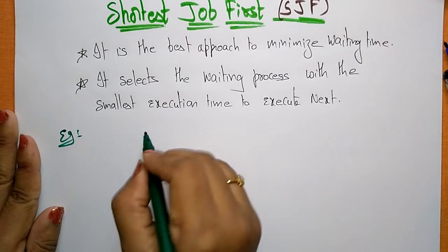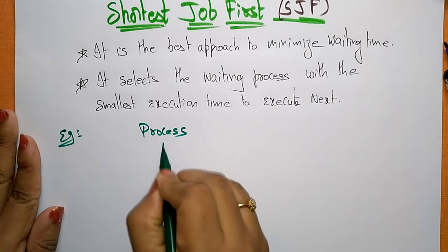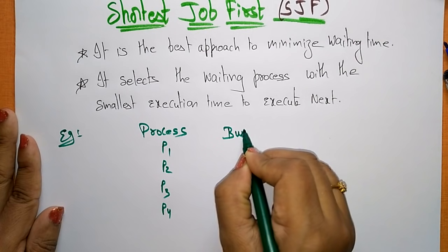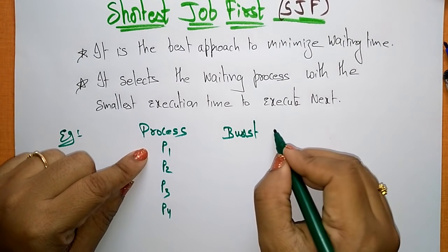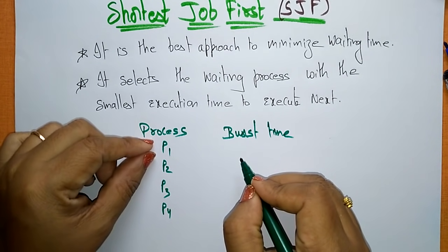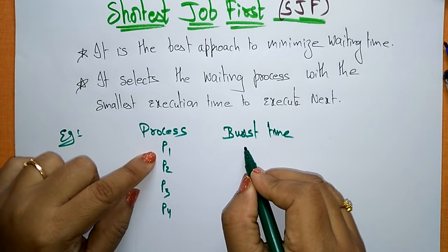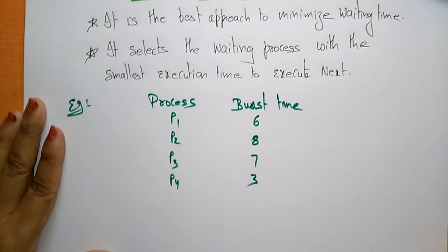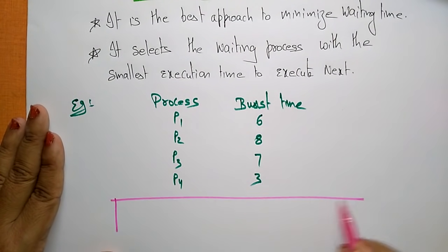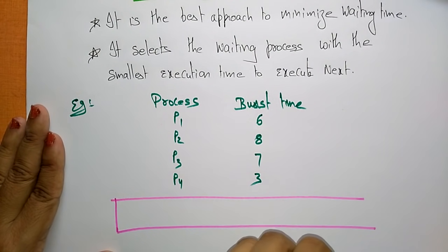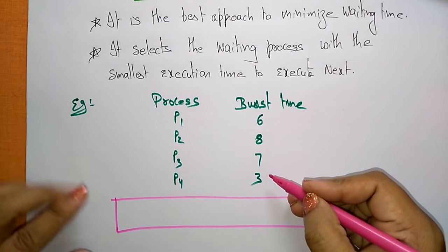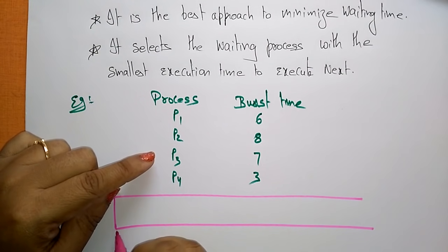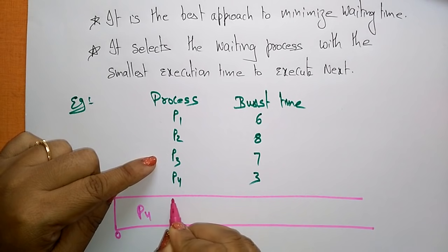I'm taking four processes: P1, P2, P3, P4. Coming to the burst time — that is the time the CPU is executing that process, controlling that process — so the burst time for P1 is 6, P2 is 8, P3 is 7, P4 is 3. So with Shortest Job First, which is the shortest job? The CPU takes only 3 for process P4, since the burst time is only 3.